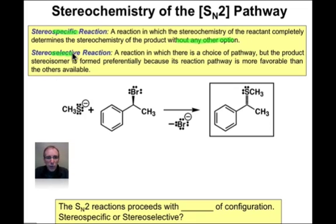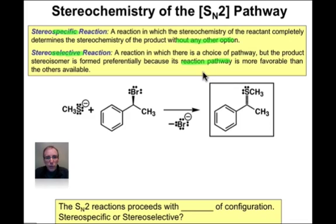That's different than a stereoselective reaction, in which there's a choice of pathways that could be followed, and each pathway will lead to different stereochemical outcomes. In general, one reaction pathway may be more favorable than the other, so we don't always end up with equal mixtures of stereoisomers — we might end up with a preference, a selectivity. That's why we use the word stereoselective reaction.